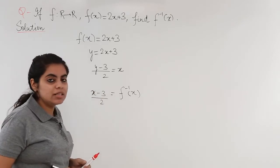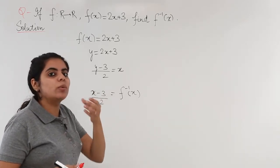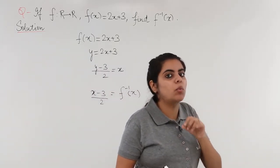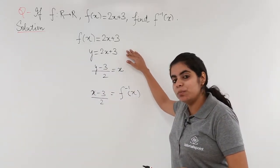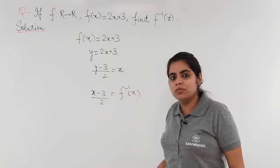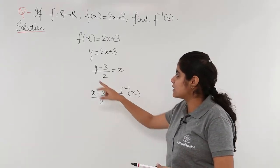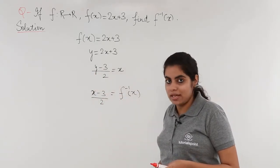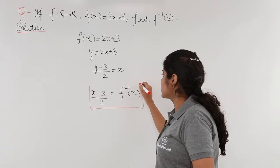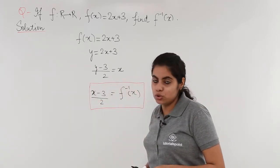What do we have to do? Take the function f(x), substitute it with y, find the value of x, then compute the inverse by substituting y with x again. This gives the answer: f inverse of x equals (x-3)/2.